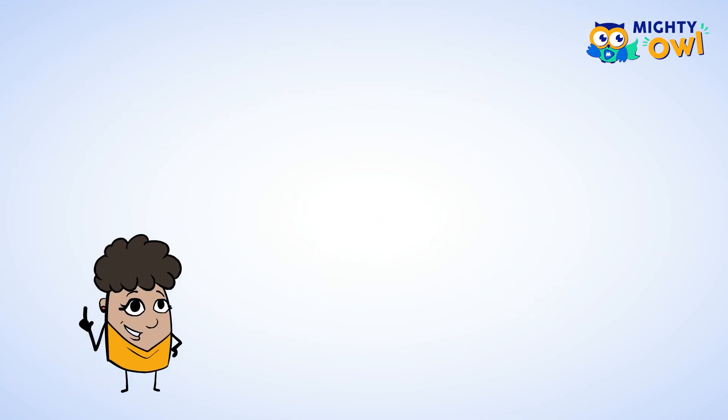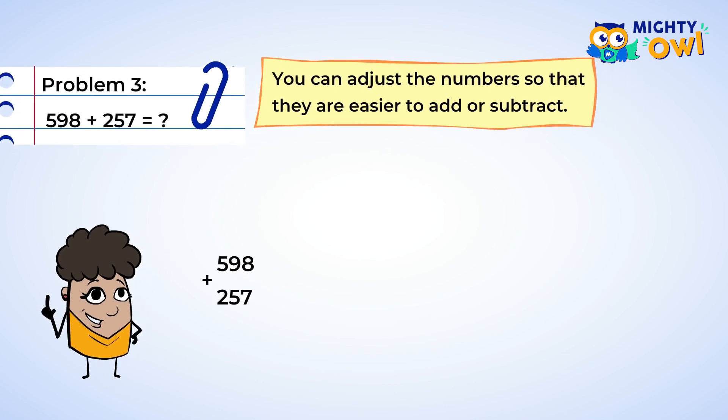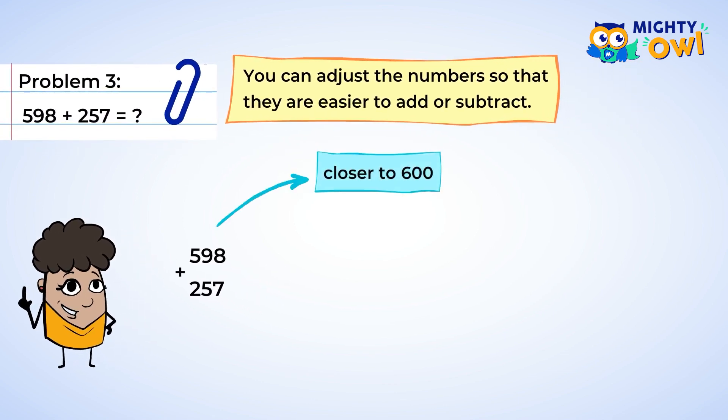Here's another strategy you can use. Sometimes you can adjust the numbers so that they're easier to add or subtract. Take a look at five hundred ninety-eight plus two hundred fifty-seven. Five hundred ninety-eight is really close to six hundred, and six hundred is a nice number to work with. But be careful. We're not actually rounding here, since rounding will change the total amount.